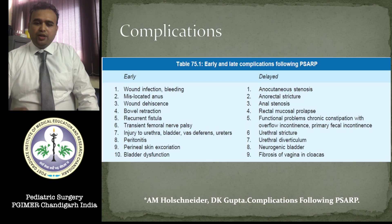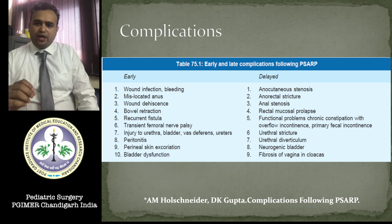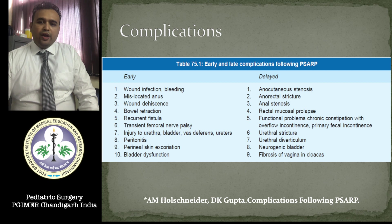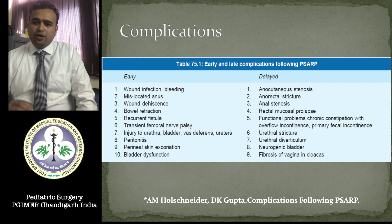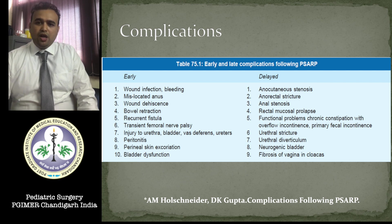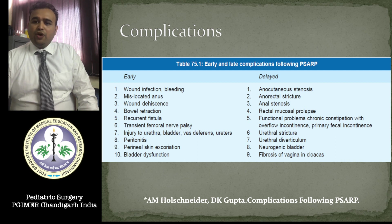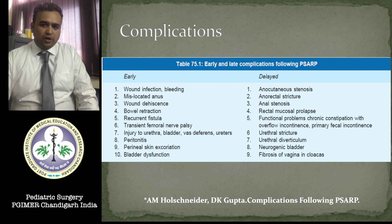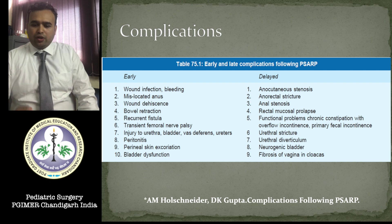Complications include wound dehiscence and wound infection, avoidable by keeping the patient prone for two to three days; stomal pull-through bowel necrosis and bowel retraction requiring a redo PSARP; transient femoral palsy from patient positioning; inadvertent injury to the urethra or bladder; anal stenosis or stricture if the pull-through bowel skin becomes necrosed or dilatation is inadequate; and functional problems like chronic constipation and overflow incontinence. If the fistula is not ligated properly or is over-ligated, there can be urethral stricture or urethral diverticulum.